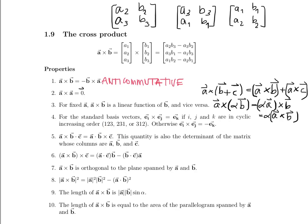Property 5: A cross B dotted with C is equal to A dotted with B cross C. Because the dot product acts on two vectors and returns a scalar, you must do the cross products first so that you have the second vector to dot with A. If you did the dot product first, you'd have a scalar and could no longer compute the cross product. This is called the scalar triple product, and it's also equal to the determinant of the matrix whose columns are A, B, and C.